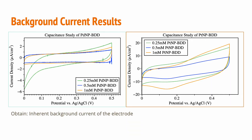Moving on to our results. For part one, our background current results — we swept the potential as previously stated in order to obtain the inherent background current of the electrode. All electrodes have an associated background current, and since we're modifying these electrodes, we needed to obtain that background current to provide a baseline. As you can see, the palladium-modified BDD electrodes show a much smaller capacitance or background current than the platinum-modified boron-doped diamond electrodes. In particular, our 0.25 millimolar palladium-modified BDD appears to have a small capacitance, though there also appears to be a little resistance. The 1-millimolar platinum-modified BDD appears to have the largest capacitance of all the modified electrodes.